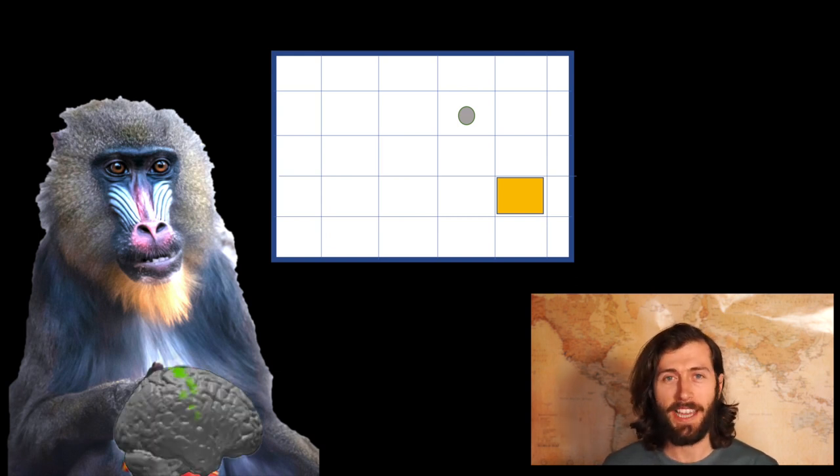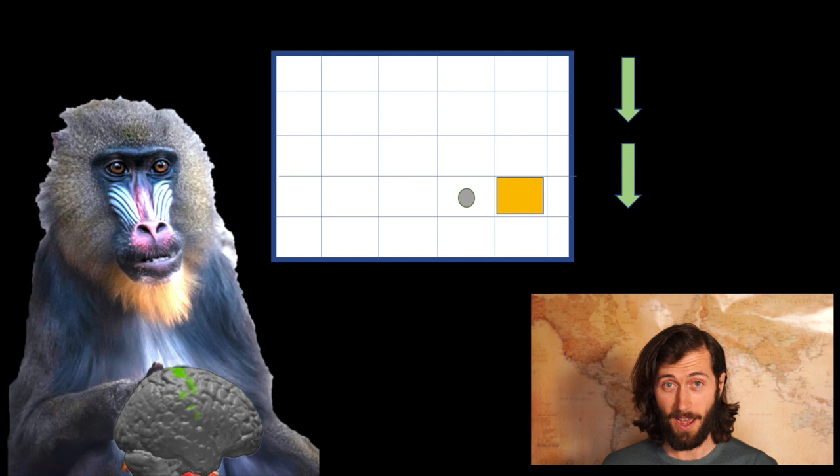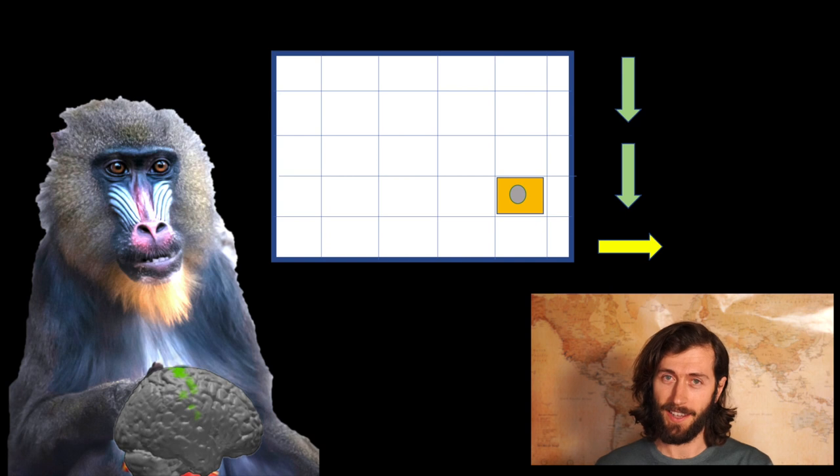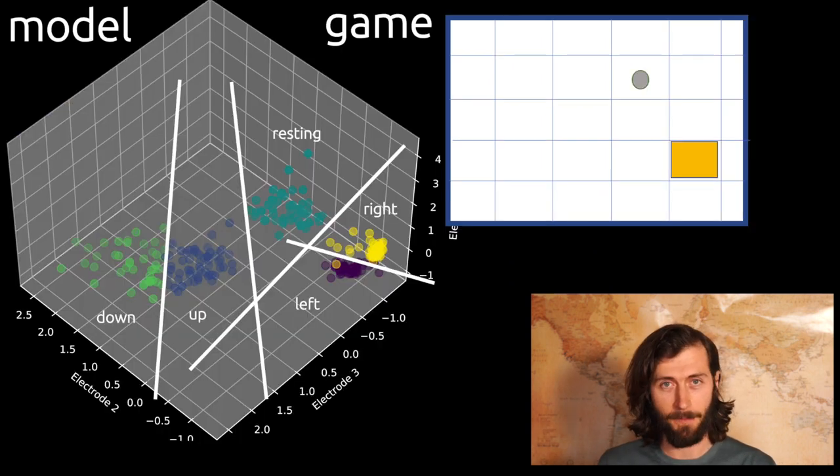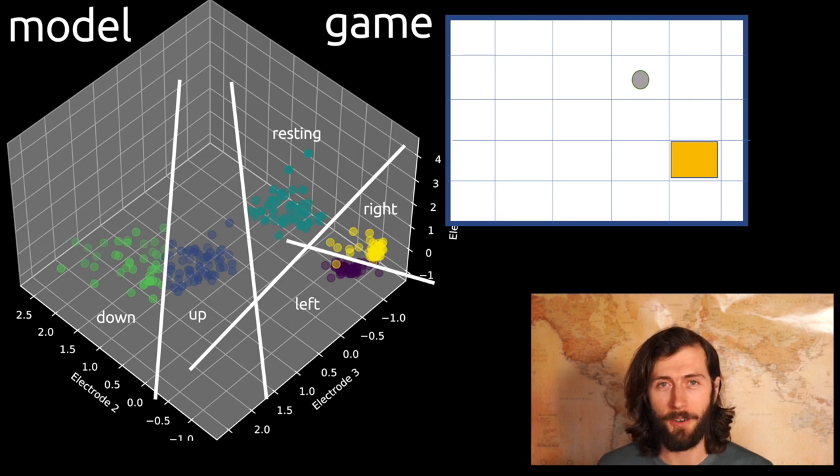In this case, the monkey has to make the movements down, down and to the right. So let's take this example and see what it looks like in real time in the model and in the game application. So we have our model, and the monkey has his task.